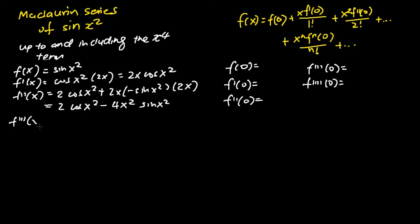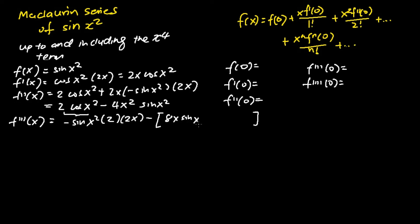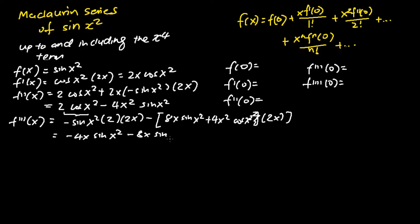Next we work out f'''(x) by differentiating f''(x) one more time. For the first term, differentiating 2·cos(x²) gives negative sine x squared times 2, and differentiating x squared gives 2x. For the second term we apply the product rule: differentiating 4x squared gives 8x times sine x squared, plus 4x squared times cosine x squared times 2x. Simplifying, the first term gives negative 4x sine x squared, the second gives negative 8x sine x squared, and the third gives negative 8x cubed cosine x squared. Combined: negative 12x sine x squared minus 8x cubed cosine x squared.